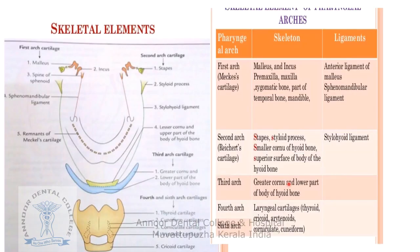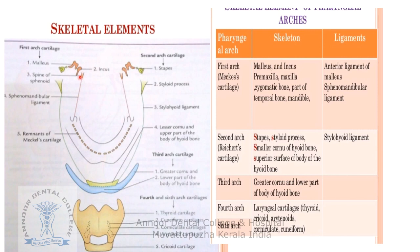The first pharyngeal arch cartilage is known as Meckel's cartilage, and its derivatives include the malleus, incus, and the sphenomandibular ligament. This ligament arises from the spine of the sphenoid and is attached to the lingula of the mandible, making it also a derivative of the first pharyngeal arch.